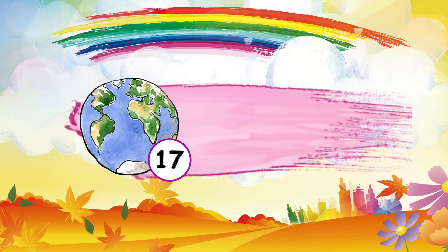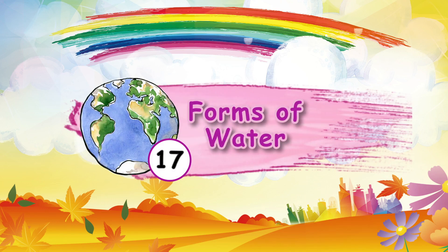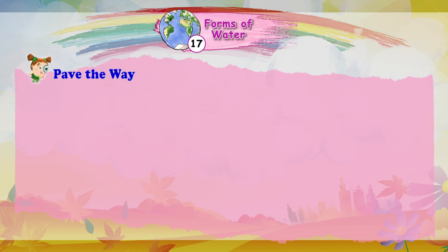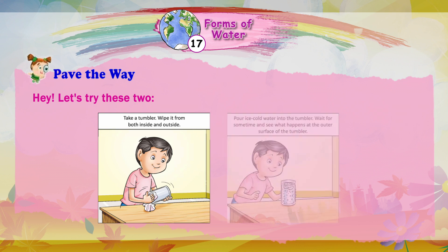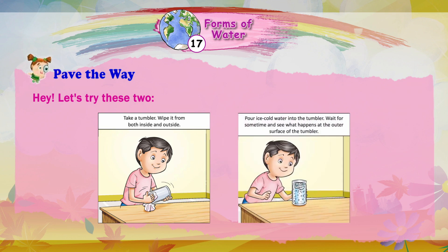Chapter 17: Forms of Water. Let's try these experiments. Take a tumbler and wipe it from both inside and outside. Pour ice cold water into the tumbler. Wait for some time and see what happens at the outer surface of the tumbler.